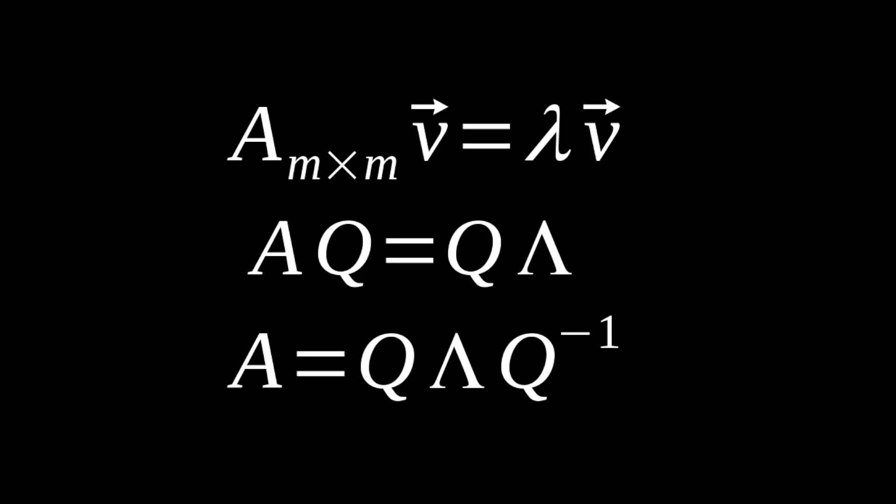Thus, for us to represent our A matrix properly, we can compute this right here, which is better known as the eigendecomposition, where we have our Q matrix containing the eigenvectors of an A matrix and the lambda matrix being, again, a square diagonal matrix that has our eigenvalues along that diagonal.